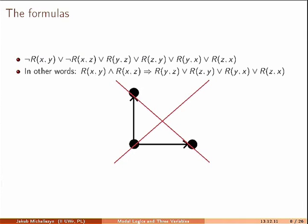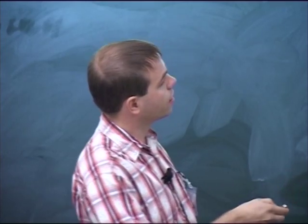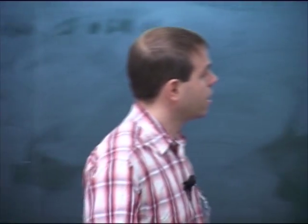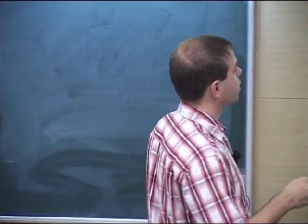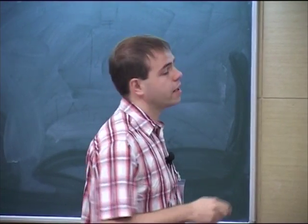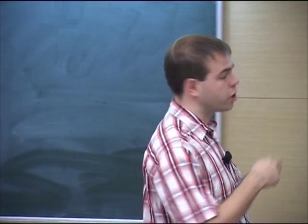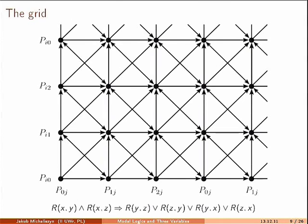The undecidability formula can be rewritten as an implication. It says that if there is a world X connected to Y and Z, then there must be at least one additional edge in that triangle — it is impossible to have three worlds where those two are the only connections. Our canonical structure for encoding undecidability is a grid-like structure, and this structure satisfies the formula: any point has three successors, and there are edges between each pair of those successors.